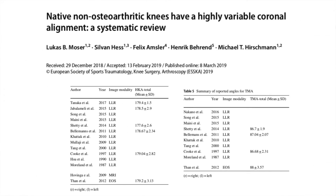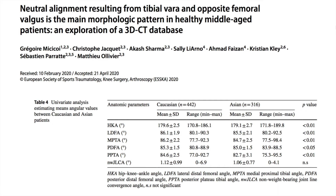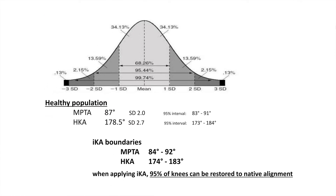An extensive review by Michael Hirschmann investigating native knee and limb alignment concluded the same numbers. A recent article by Sébastien Parat and Mathieu Olivier confirmed these values with a highly accurate 3-dimensional CT study. In a Caucasian population, using these reported mean angles and standard deviations as a reference, the native limb and knee alignment can be reproduced in 95% of the population when applying Inverse Kinematic Alignment principles.